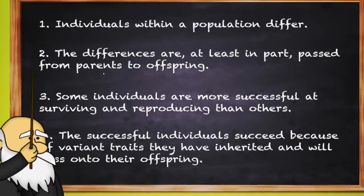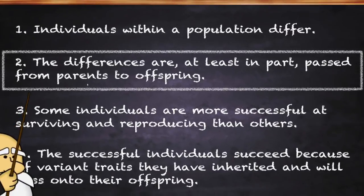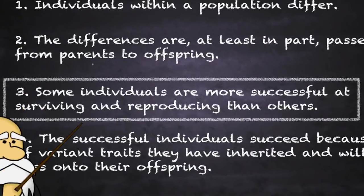Let's review. Individuals within a population differ. The differences are, at least in part, passed from parents to offspring. Some individuals are more successful at surviving and reproducing than others.